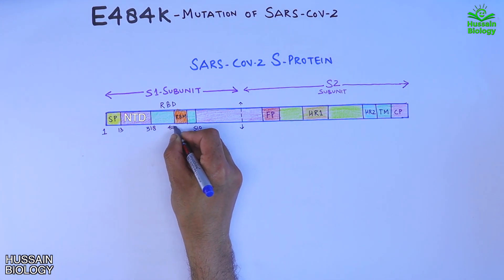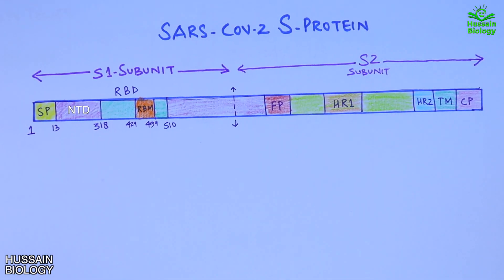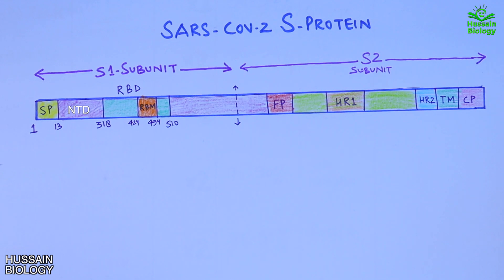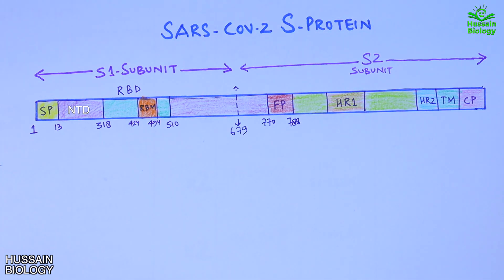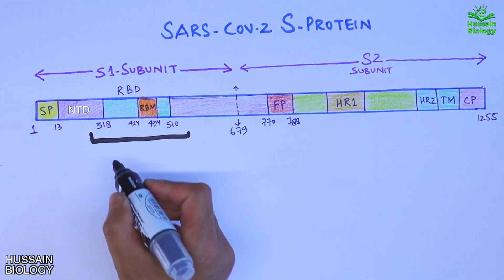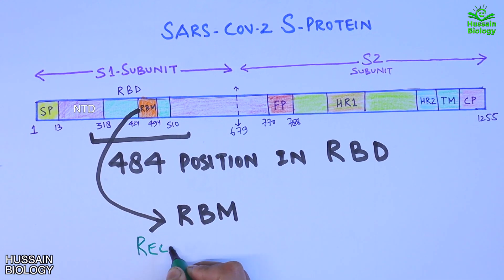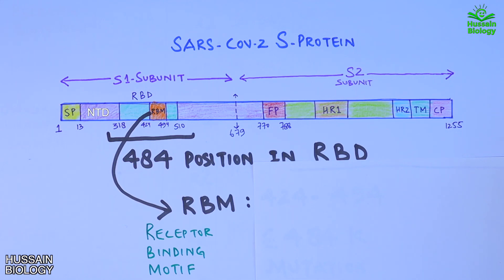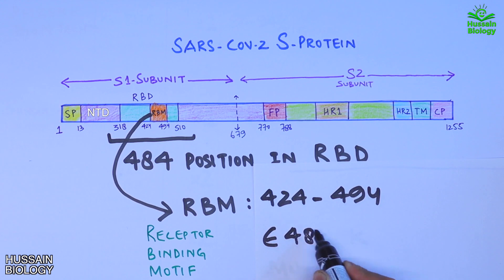From position 318 to 510 we have the RBD — the receptor binding domain — and within this domain the receptor binding motif (RBM) spans positions 424 to 494. Since the E484K mutation occurs at position 484, it lies within both the RBD and the receptor binding motif specifically.